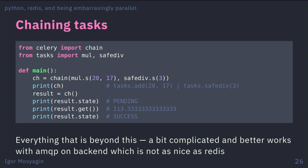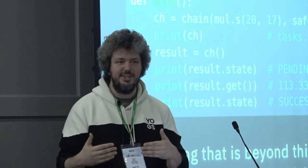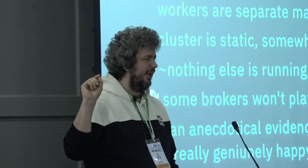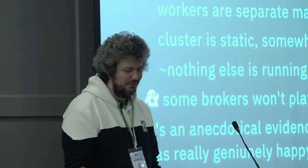Everything beyond simple examples is a bit complicated. Sometimes particular backends only work for certain things, so it won't work with the worker you have. Celery is very optimized for small, not long-running tasks, specifically web tasks. It's more traditional in the sense that you want a separate Celery cluster in your ecosystem — a few machines connected together doing things, with external monitoring. I have yet to see someone who hasn't been terribly frustrated by Celery at least once.